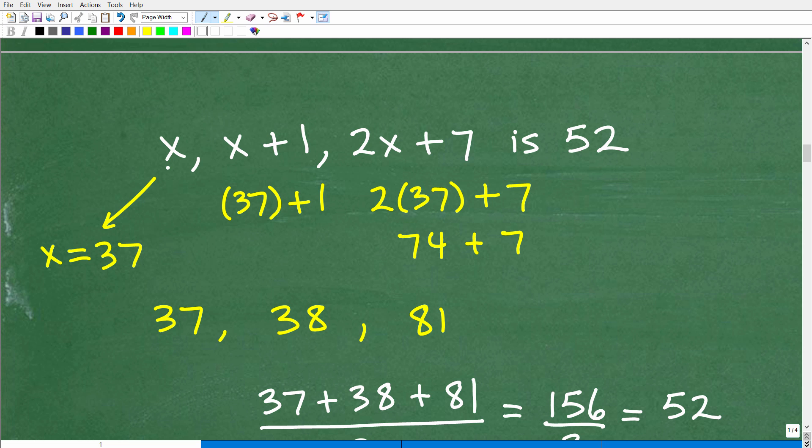All right, so let's go ahead and answer the rest of the problem. Okay, so remember, we were told that x, x plus 1, 2x plus 7, the average of these three numbers is 52. Okay, so we just solved for x. So our first number is 37. So what's going to be our second number? Well, it's going to be x plus 1. We now know that x is 37, so that's going to be 37 plus 1. That's 38. So our first number is 37. Our second number is 38. And our last number is 2x plus 7. Again, we know what x is. That's 37. So that's going to be 2 times 37. 74 plus 7 is 81. So these are our three numbers.